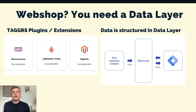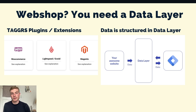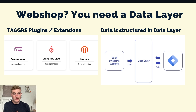After you choose your hosting provider and set up your subdomain, you need to determine if you need a data layer on your website. A data layer structures your website data in a way that allows you to use that information for your tags and triggers. If you want to track events such as purchases, add-to-cart actions, etc., it's important to implement the data layer. Most CMS platforms offer free plugins for this, and Taggers also has their own free plugins you can find in your account.